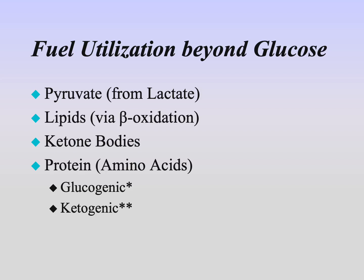We'll also be able to use proteins via glucogenic or ketogenic amino acids, where they can either provide the acetyl-CoA that is necessary, provide the ketone bodies that are necessary, or provide the intermediates within the Krebs cycle that are necessary. Each one of these fuel sources gives us a secondary pathway to meet our ATP demands by having available fuel sources outside of the carbohydrates of glucose or fructose.